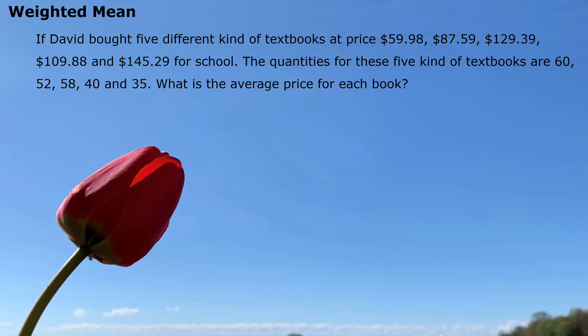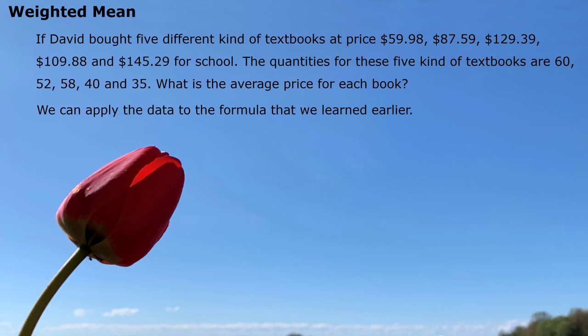Here the story changes. David bought five different kinds of textbooks at prices $59.98, $87.59, $129.39, $109.88, and $145.29 for school. The quantities for these five kinds of textbooks are 60, 52, 58, 40, and 35 copies respectively. What is the average price for each book? We can apply the data to the formula we just learned.